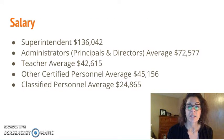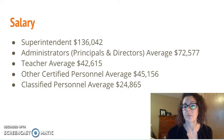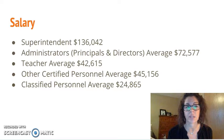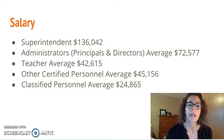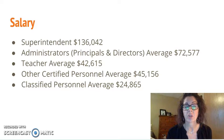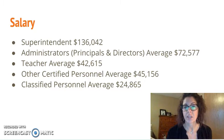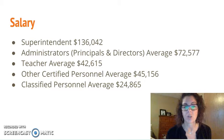Salary ranges: our superintendent salary is shown. Our average administrator salary is $72,577 — a combination of building principals and directors of different areas. Our average teacher salary is $42,615. I also showed our other certified personnel average, which encompasses specialized employees who are USD 418 employees but work through the McPherson County Special Ed Cooperative — positions like school psychologists, speech-language pathologists, and occupational therapists — as well as our classified personnel average wage.